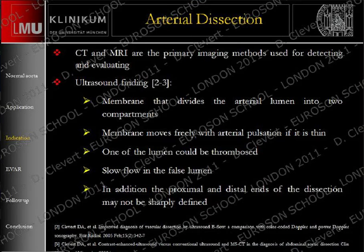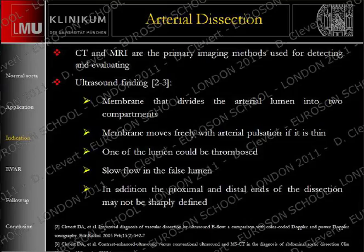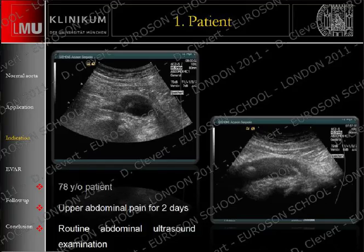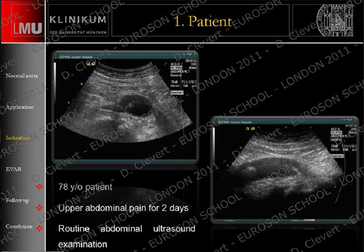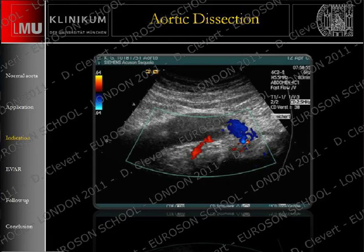If we speak about aortic dissection, we know that often we see the flap move in grayscale, but that doesn't always happen. If we want to follow up this patient, we want to know if both lumens have flow or if one is thrombosed, and where the entry from the renal artery is. In the easy case, you see the movement of the flap in the axial view and also the longitudinal view. By observing how fast the flap moves, you can identify the true lumen and the false lumen. With color Doppler we see different flow directions — here coded in red, here coded in blue.